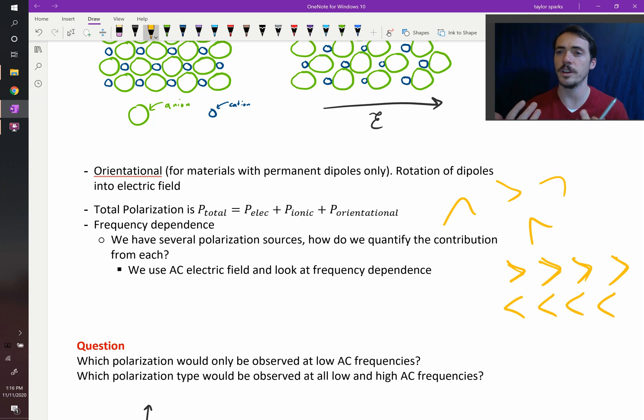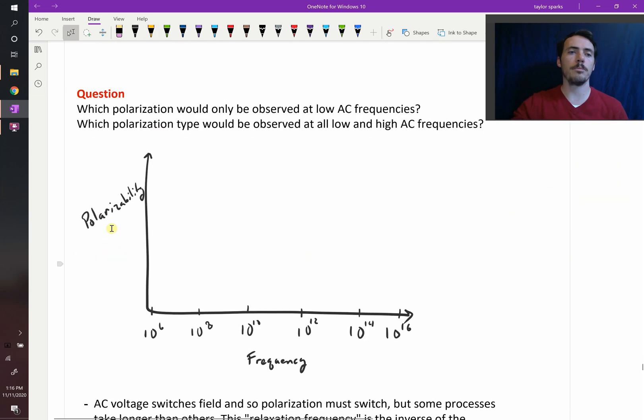You'll see a reduction in the net polarization. You won't see that polarization happen. So we can actually do that. If we plot polarizability as a function of frequency, so over here is really fast, and to the left it's really slow, what we typically see is something that looks like this.